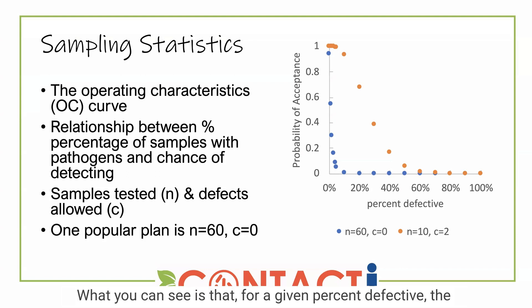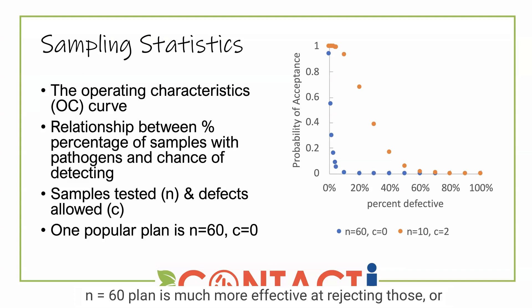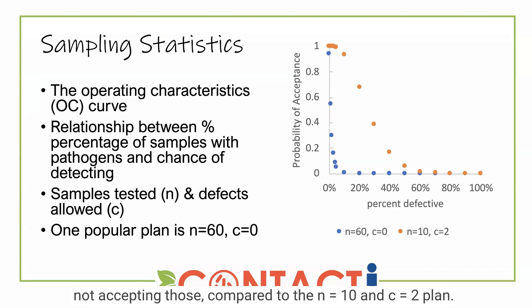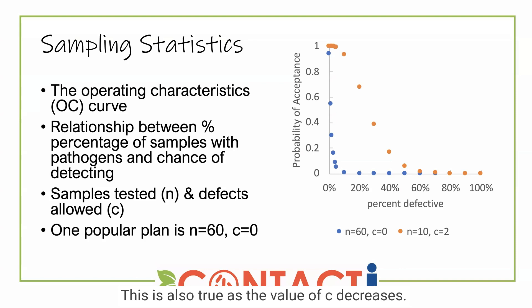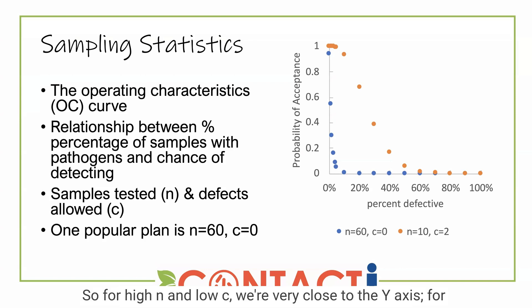What you can see is that for a given percent defective, the N equals 60 plan is much more effective at rejecting those compared to the N equals 10 and C equals two plan. You can also see that as the value of N increases, the curve moves closer to the Y axis. This is also true as the value of C decreases. So for high N and low C, we're very close to the Y axis; for lower N and higher C, we're further away from the Y axis.